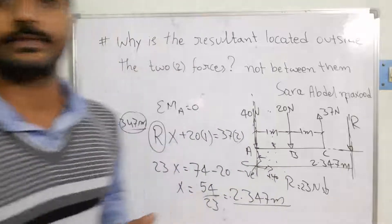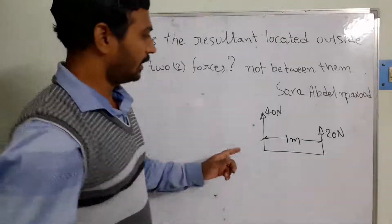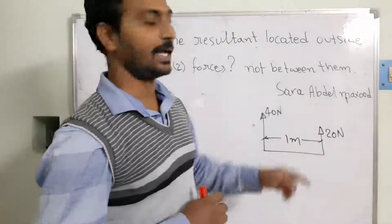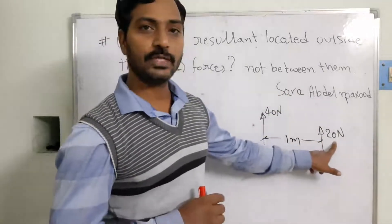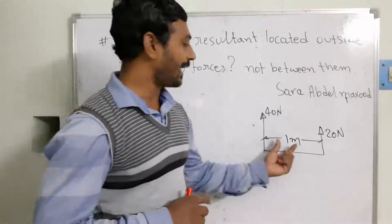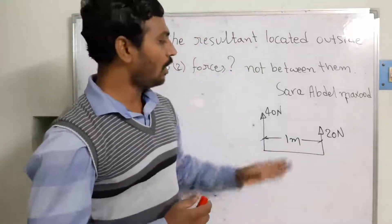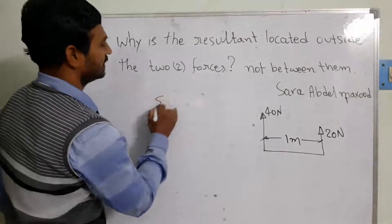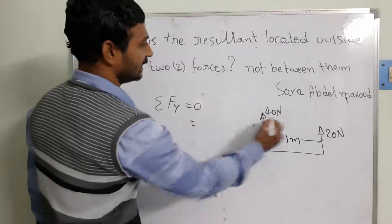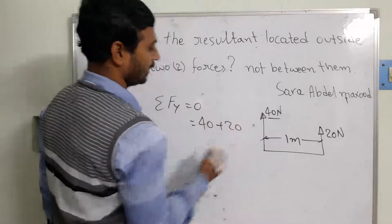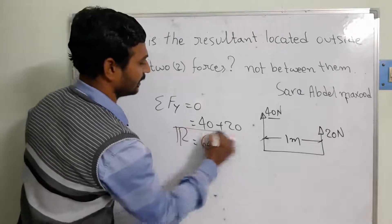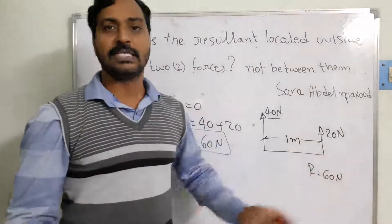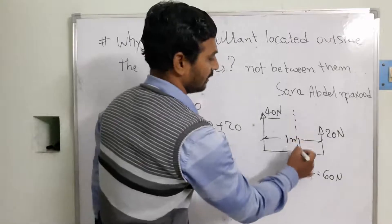For more clarification, I am doing one more problem. Here I have taken only two forces which are in the same direction — like forces. One is 40 Newtons and one is 20 Newtons, acting on a beam, apart by 1 meter distance. Using sigma Fy = 0: R = 40 + 20 = 60 Newtons. But I don't know where it exists, so I am assuming it is somewhere in between for the time being.